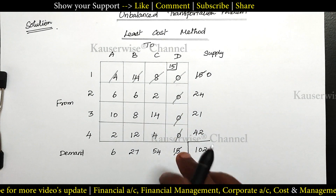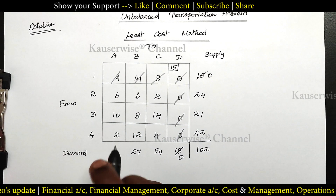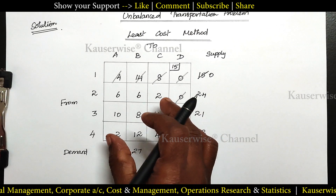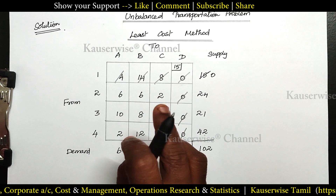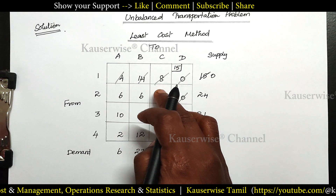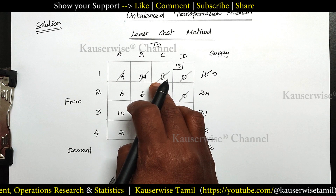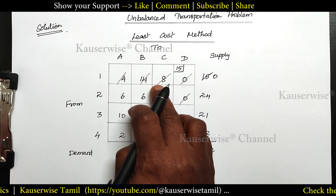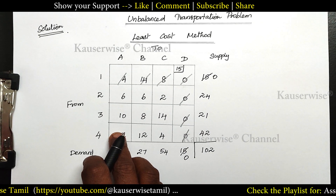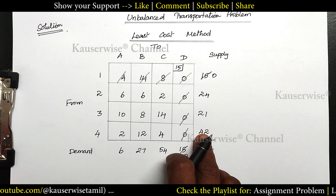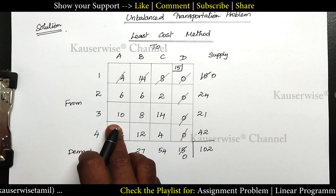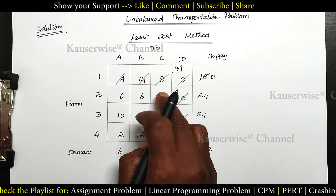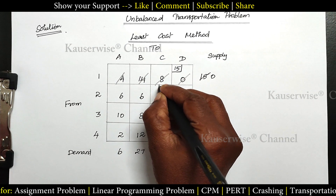After deleting that row and column, from the remaining values the least cost is 2 — but there is a tie with two cells having cost 2. In case of a tie, we select the cell where we can allocate the maximum value. If I select the first cell: demand is 54 and supply is 24, so the minimum is 24. If I select the second cell: demand is 6 and supply is 42, so the minimum is 6. Since 24 is the maximum allocation, I select the first cell. Allocate 24; supply becomes 0 and the demand balance is 30. This row gets cancelled.